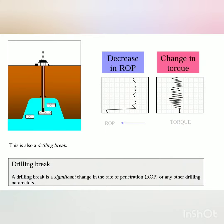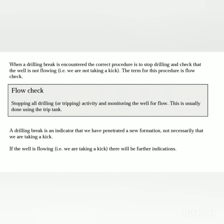Drilling break: a drilling break is a significant change in the rate of penetration (ROP) or any other drilling parameters. When a drilling break is encountered, the correct procedure is to stop drilling and check that the well is not flowing — i.e., we are not taking a kick. The term for this procedure is flow check.